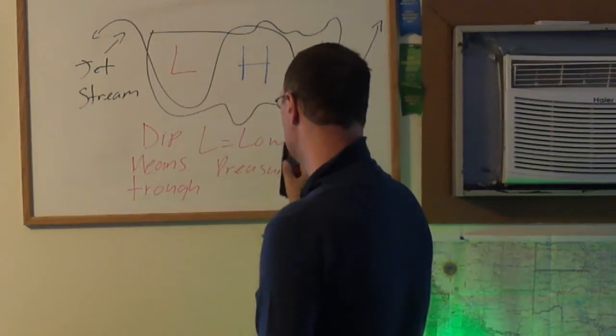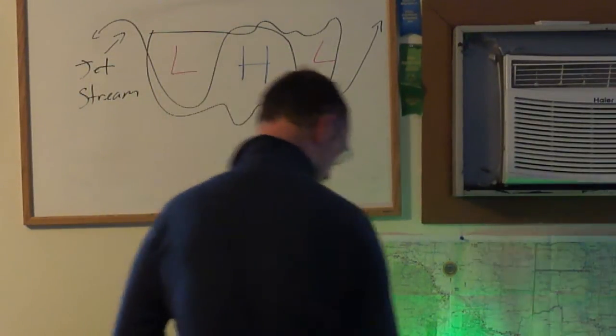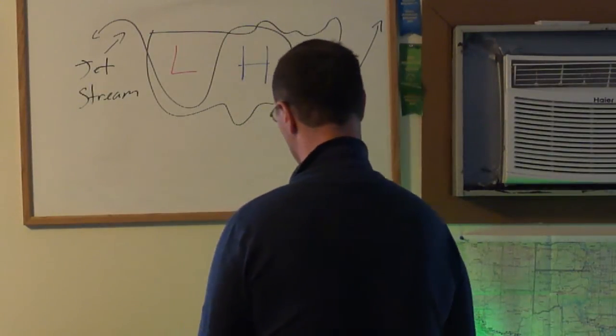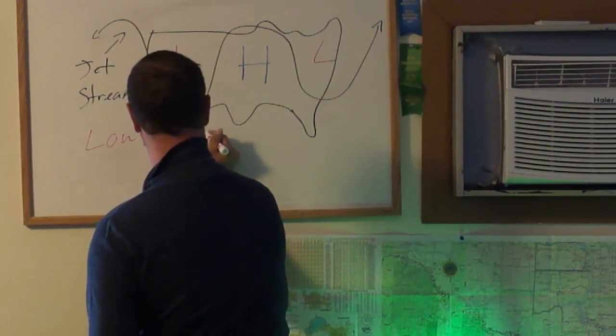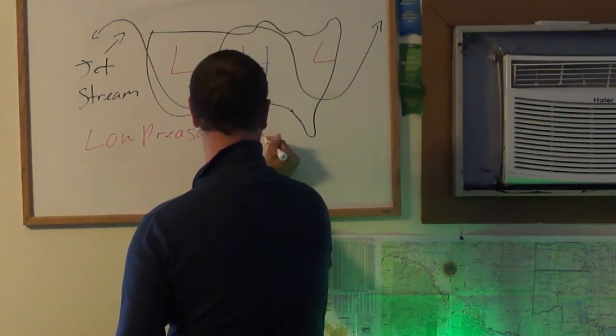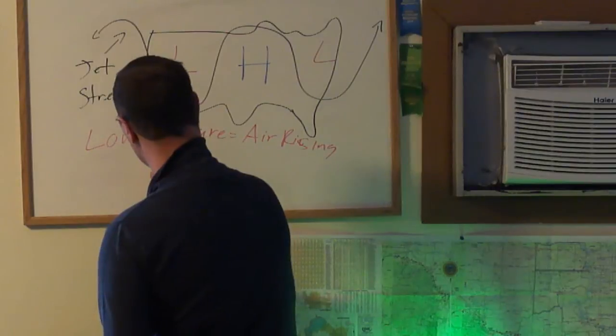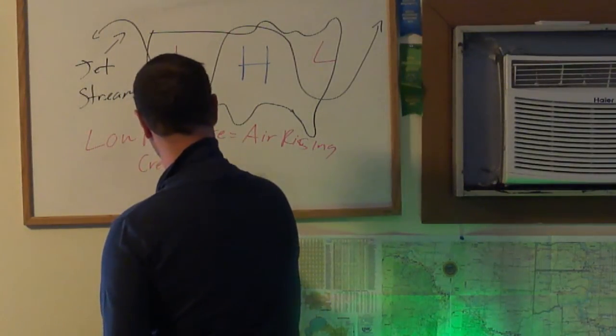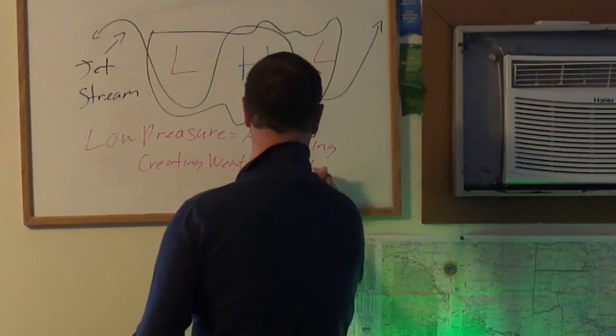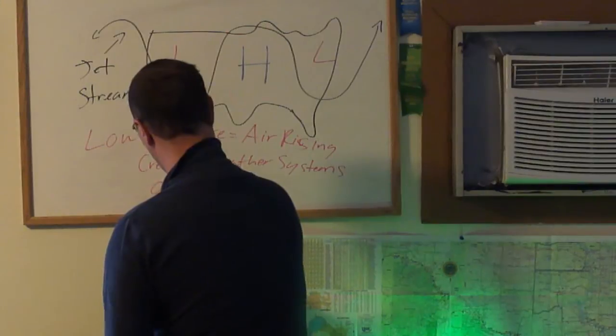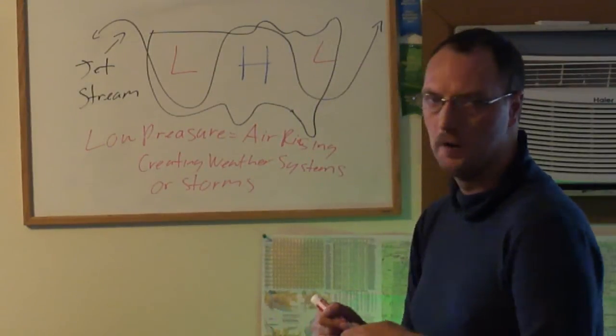An L equals low pressure. Low pressure is air rising. For any weather system or storm, that is the definition of a low pressure system.